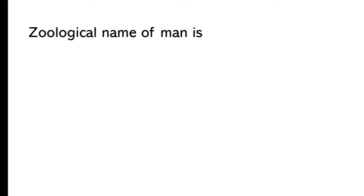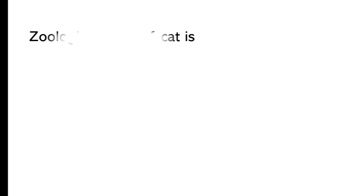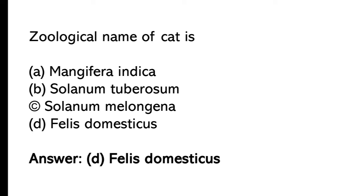Zoological name of man is: So the correct answer is option D, Homo sapiens. Zoological name of cat is: So the correct answer is option D, Felis domesticus.